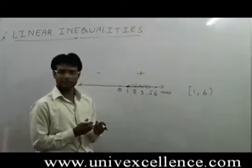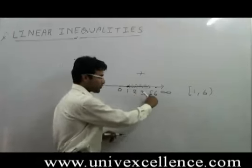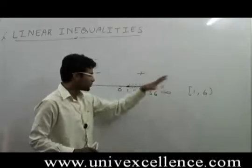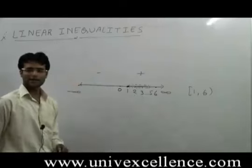The solution is between one and six. One is included - one, two, three, four, five are included, but six is not. Thus we can show these numbers on this interval on the number line.